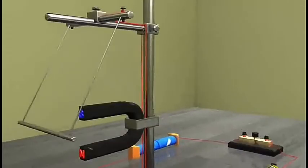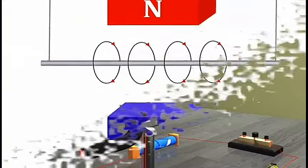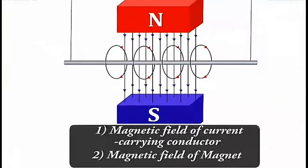This force on the current carrying conductor in a field is due to the interaction between the magnetic field due to the current carrying conductor and the magnetic field of magnet in which the conductor is placed.